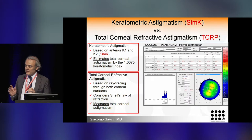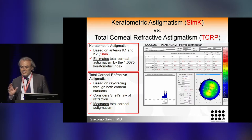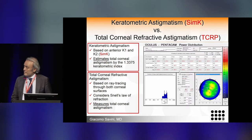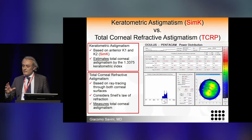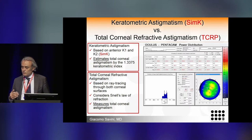The Pentacam can give you different corneal powers. We can use the anterior K1 and K2, which are the traditional simulated keratometry, where the total corneal power is estimated using the 1.3375 keratometric index. This gives us an estimation of the total corneal power from just the anterior corneal curvature measurements.